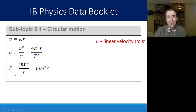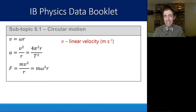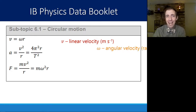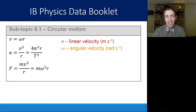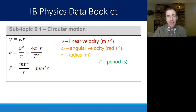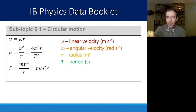Let's define the key variables. V is the linear velocity, measured in meters per second — how much ground you cover in a certain amount of time. Omega, this curly W, is the angular velocity measured in radians per second, describing how much of the circle is swept per second. R is your radius in meters. Capital T is the period — the time it takes to complete one full rotation or cycle.